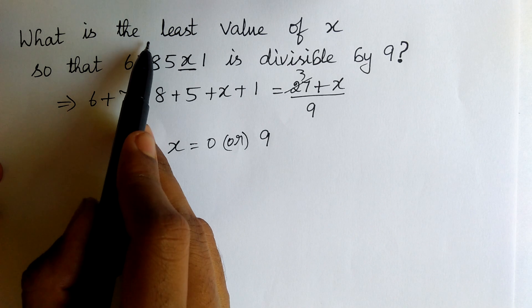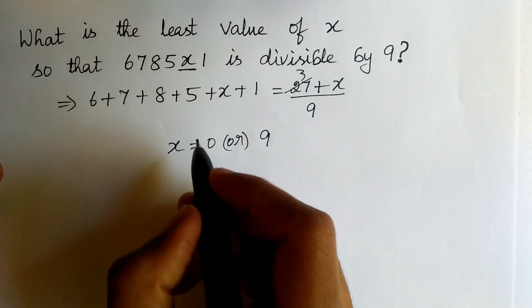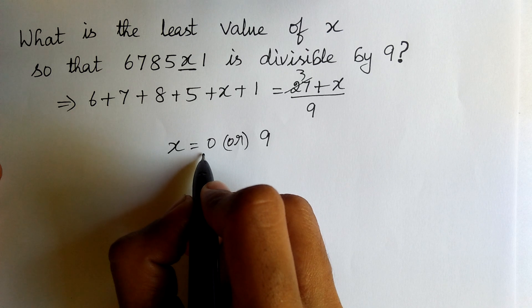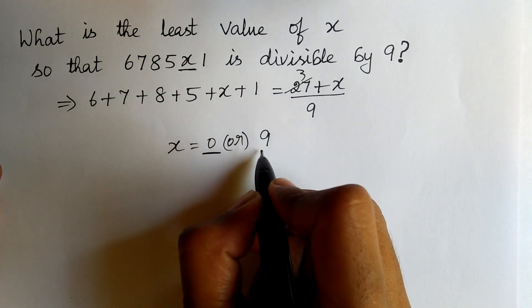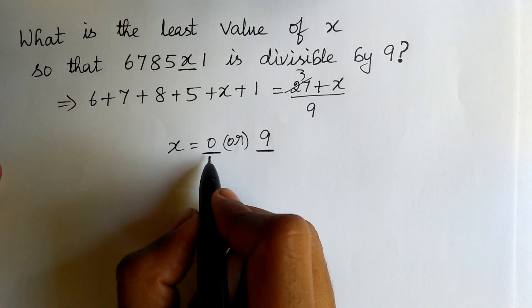The question is we need to find the least value of x. Therefore, the least value of x is 0 and the maximum value is 9. Now we got the answer.